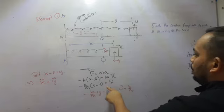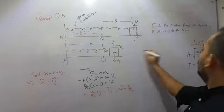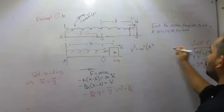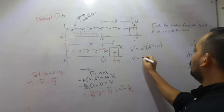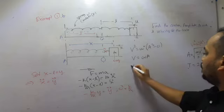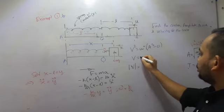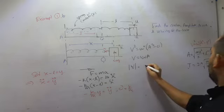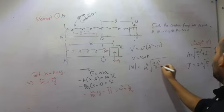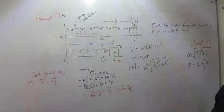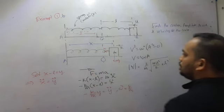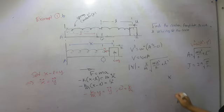Finally, the velocity at the center: at the center, Y = 0. Using v² = ω²(A² - Y²) with Y = 0 gives v = ωA. Substituting: v = √(K/M) × √(mu²/K + L²). This is the maximum velocity — the speed of the particle at the center. You can also find the velocity at any general point by substituting the appropriate value of Y.